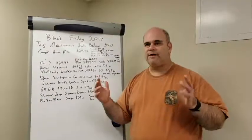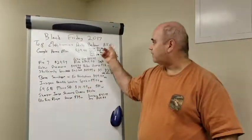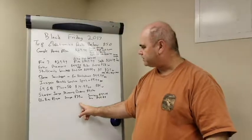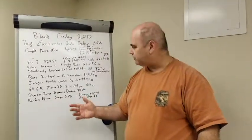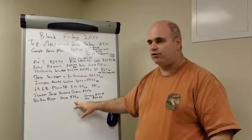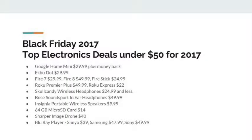I could not find any big screen TVs for $50 or less, but I did find Blu-ray players. Now, Blu-ray players, they've been out for a few years now. Prices are coming down on them. At Walmart, they have the Sanio for $39. Best Buy, some higher-end products, the Samsung for $47.99 and the Sony for $49.99.